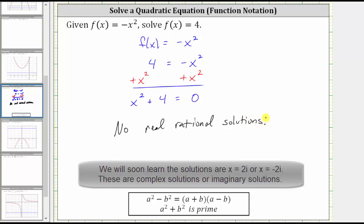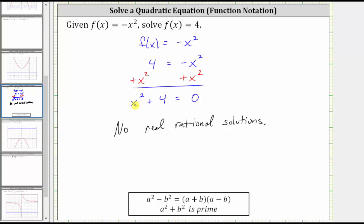So when solving by factoring, once we set the equation equal to zero, if it's not factorable, it doesn't mean we don't have any solutions, it just means we don't have any real rational solutions. These solutions will be either irrational or complex, which we will learn about very soon.